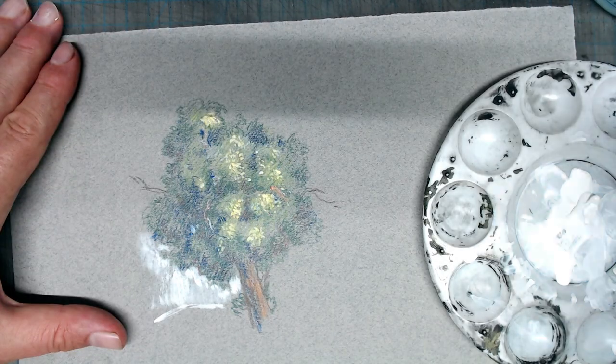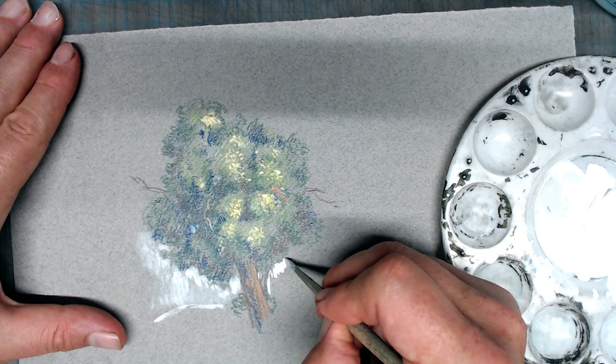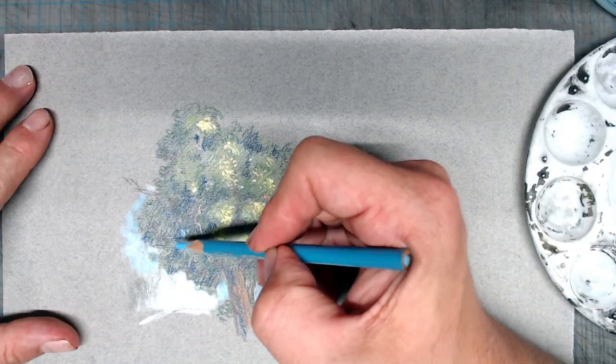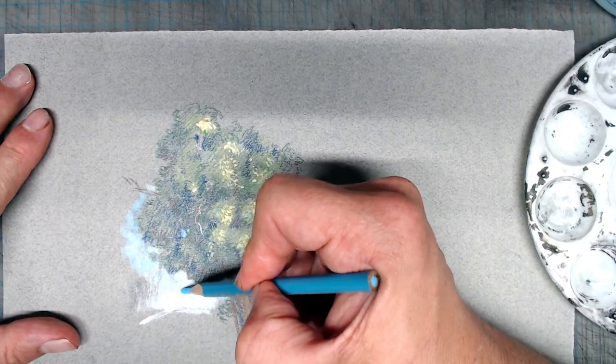Once the gesso layer is dry, I go over it and add some brilliant color, giving the tree texture, contrast, and dimensionality that, again, would have been hard to achieve with the pencils alone. Here is the finished drawing.